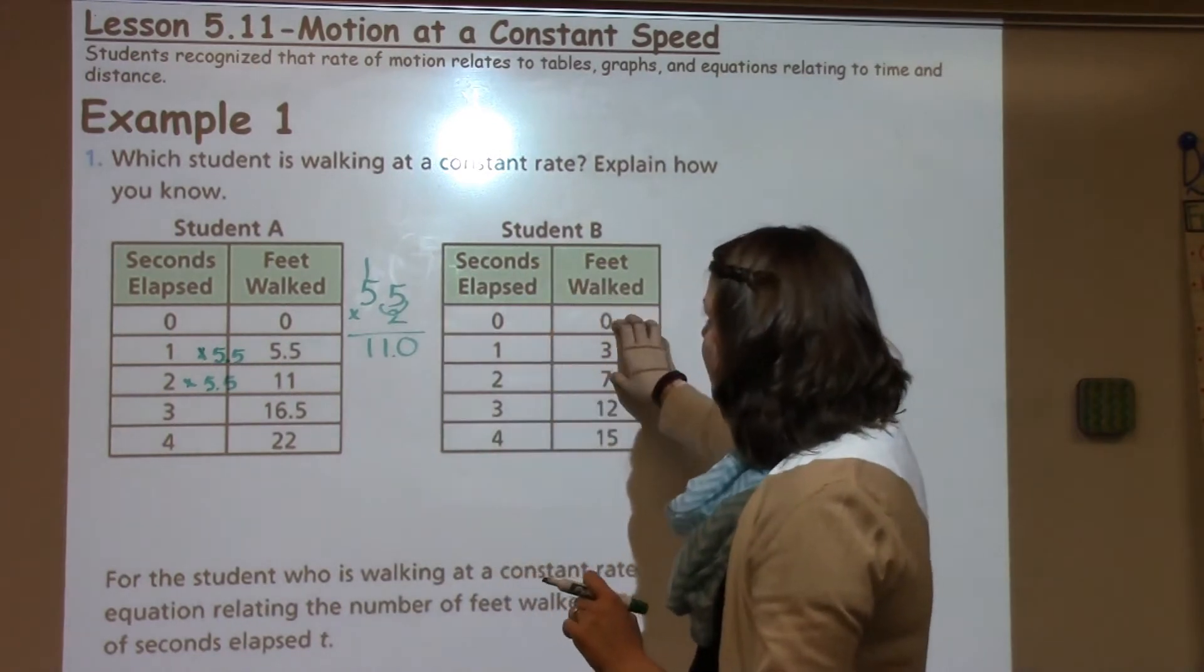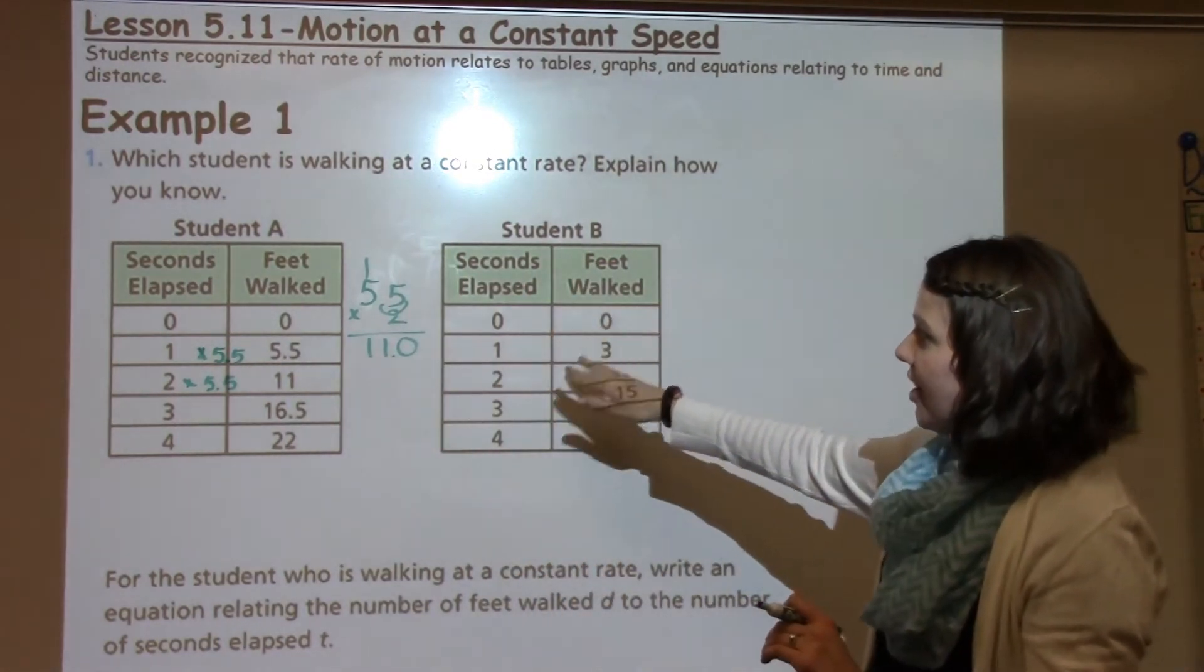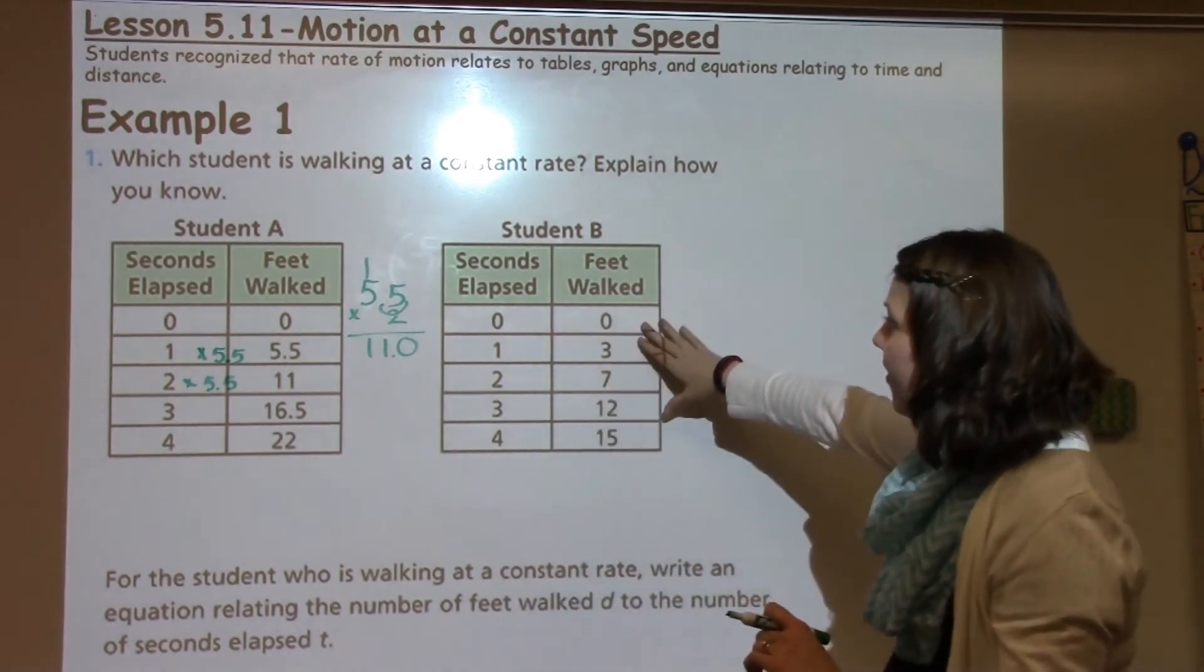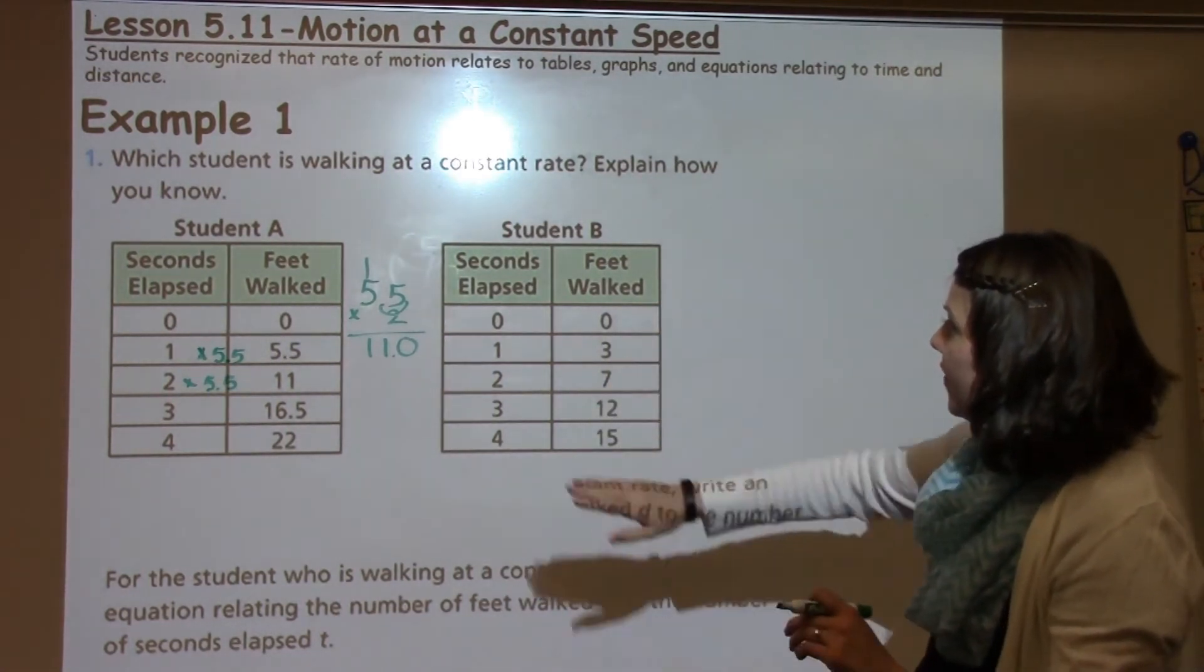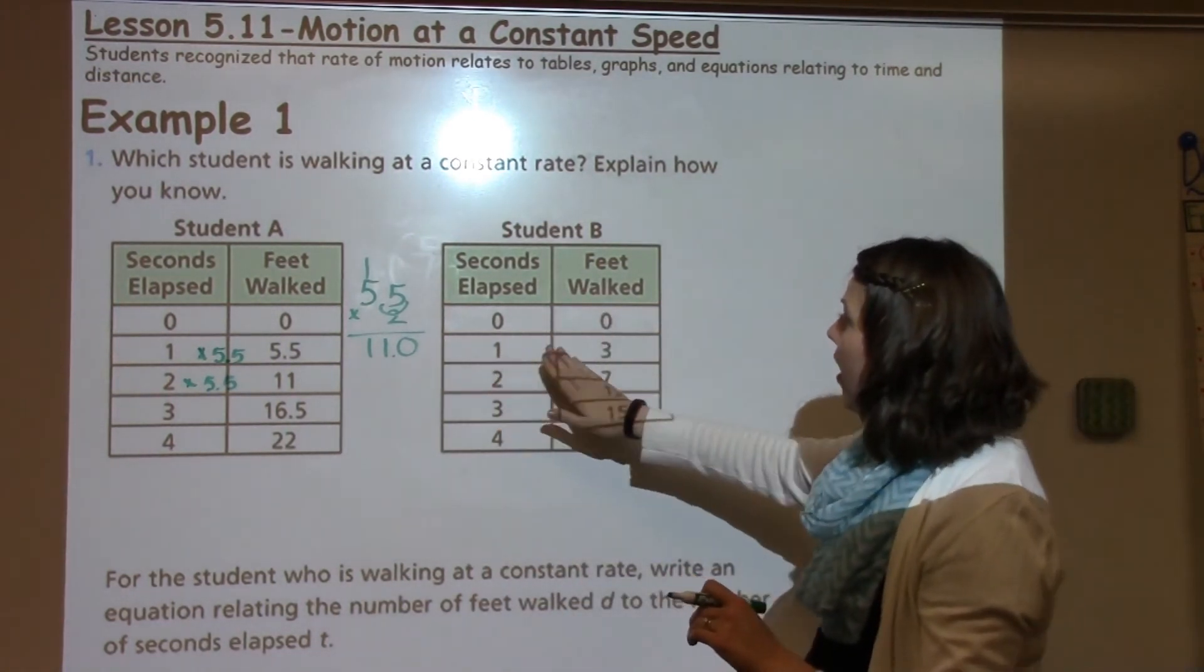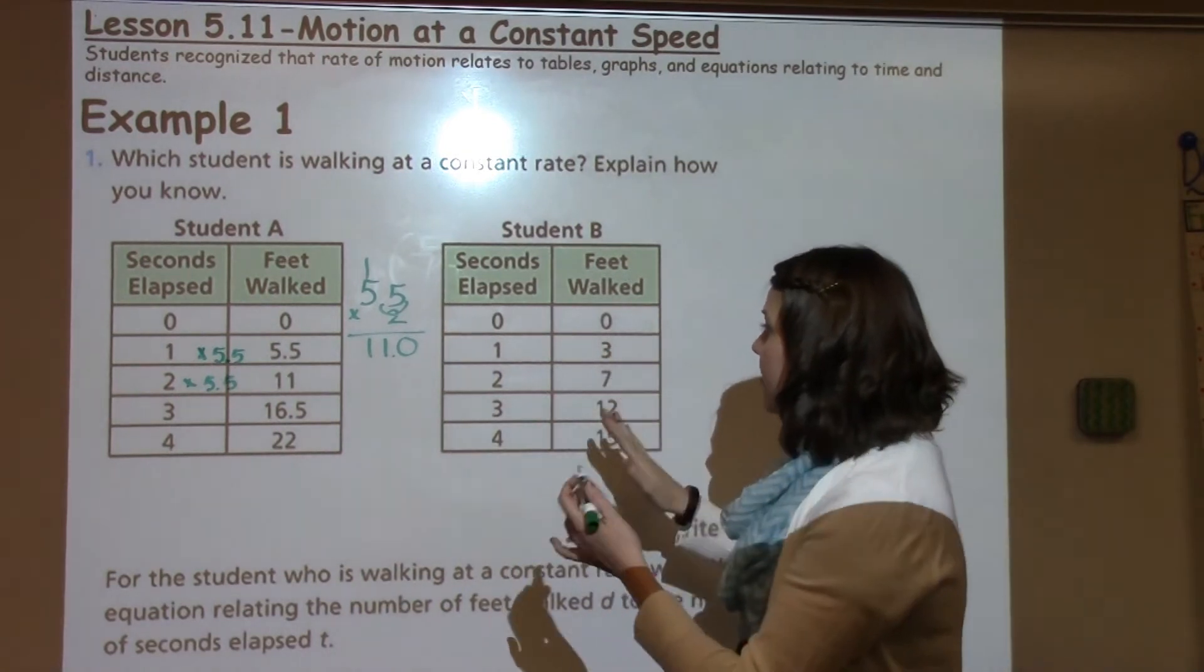I'm going to go over to this one and see if it looks like it's increasing at a constant rate, or if this one obviously is not. We've got 0, 0, and we have 1 and 3. That could be times 3 or plus 3.